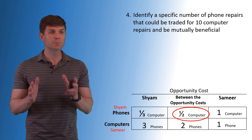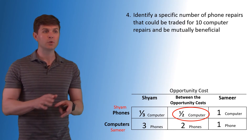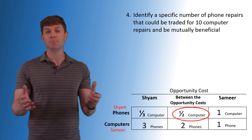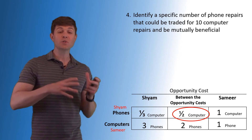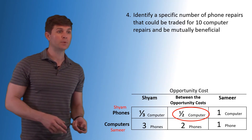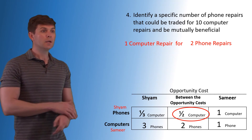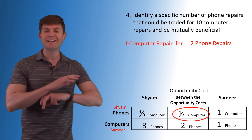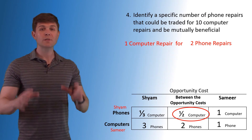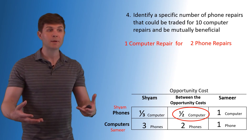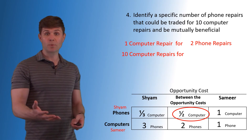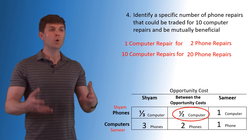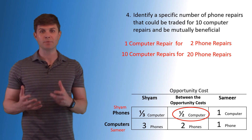Identify a specific number of phone repairs that could be traded for ten computer repairs and be mutually beneficial. We know one computer repair for two phone repairs is acceptable, so we multiply by ten — ten computer repairs for twenty phone repairs would also be mutually beneficial.